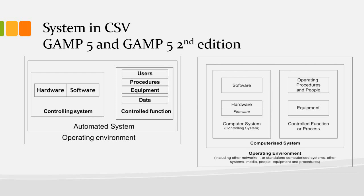Let's discuss the definition of the system in GAMP 5 and GAMP 5 2nd edition. What changed when we looked at the definition of the system in GAMP 5 and GAMP 5 2nd edition?